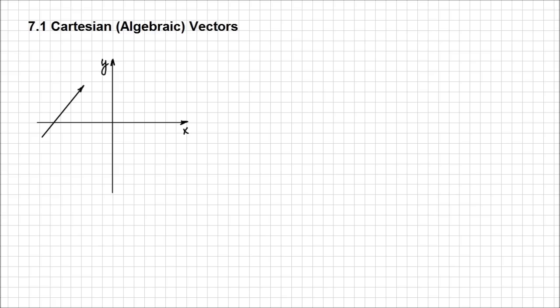Let's actually see how we can express a vector in an algebraic manner. Consider this vector. We have the tail of the vector m and the tip n. We can even denote it just with a small letter u for simplicity. I just placed it on this Cartesian system. But like I said in the previous chapter, we can take any vector and translate it for our convenience.